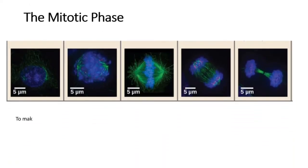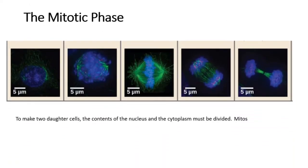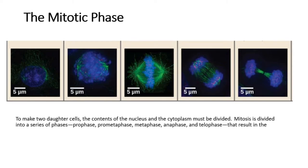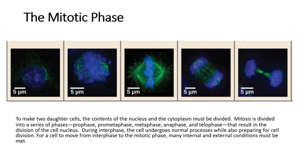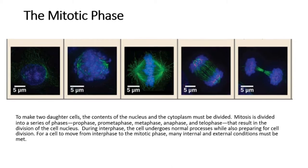The mitotic phase. To make two daughter cells, the contents of the nucleus and the cytoplasm must be divided. Mitosis is divided into a series of phases — prophase, prometaphase, metaphase, anaphase, and telophase — that result in the division of the cell nucleus. During interphase, the cell undergoes normal processes while also preparing for cell division. For a cell to move from interphase to the mitotic phase, many internal and external conditions must be met.